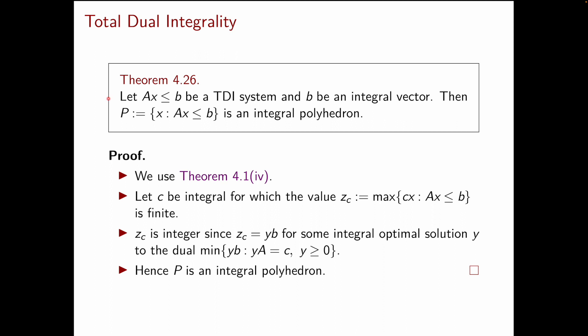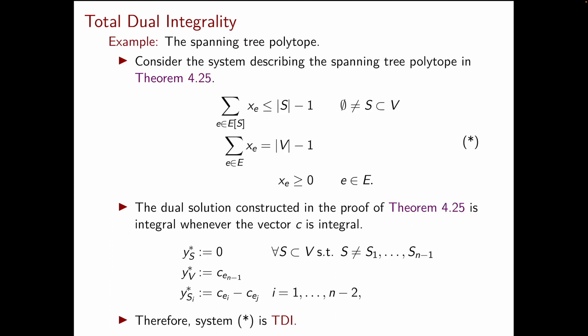Let's read the statement. Let Ax ≤ b be a TDI system and b be an integral vector. Then the polyhedron given by Ax ≤ b is integral. So, this is exactly the missing link. If we now go back to the spanning tree polytope, we have now understood that the system star is TDI.